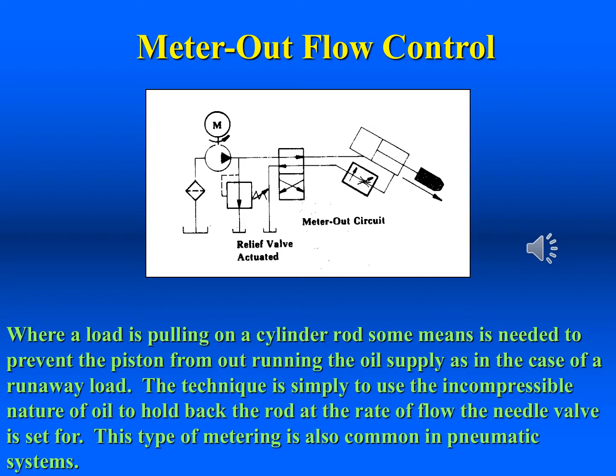When there exists the possibility of a load pulling on a cylinder in such a way as to cause its piston to accelerate away from the incoming oil flow, restriction on the oil leaving the actuator is needed. This type of control, called meter out, is the most common flow control used in both hydraulic and pneumatic systems. This type of control is most effective because the fluid cannot exit the cylinder any faster than the restriction allows it, no matter what the load is.